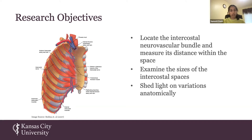Our research project had three goals: first, locate the intercostal neurovascular bundle and measure the distance of the structures within the intercostal space — the bundle is typically located between the internal intercostal muscle and innermost intercostal muscle. Second, examine the sizes of the intercostal spaces formed by the ribs — is the fifth intercostal space the location with the largest margin of error, or is it the fourth or sixth? Third, note variations of the intercostal neurovascular bundle — does VAN hold as the most common variation?